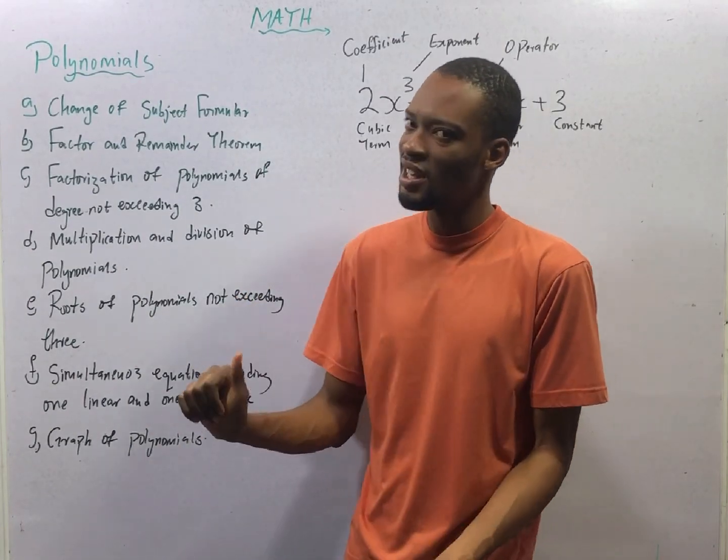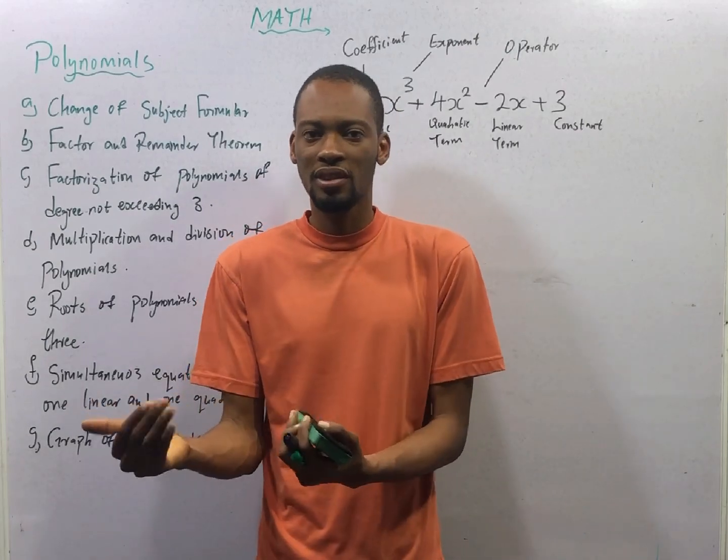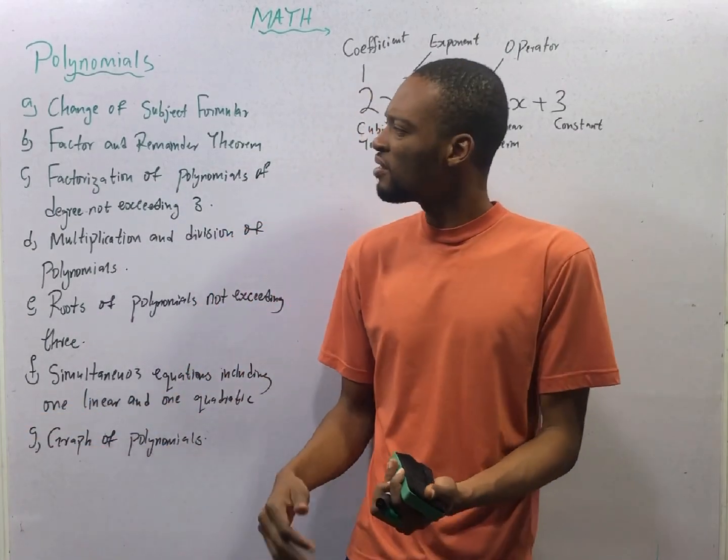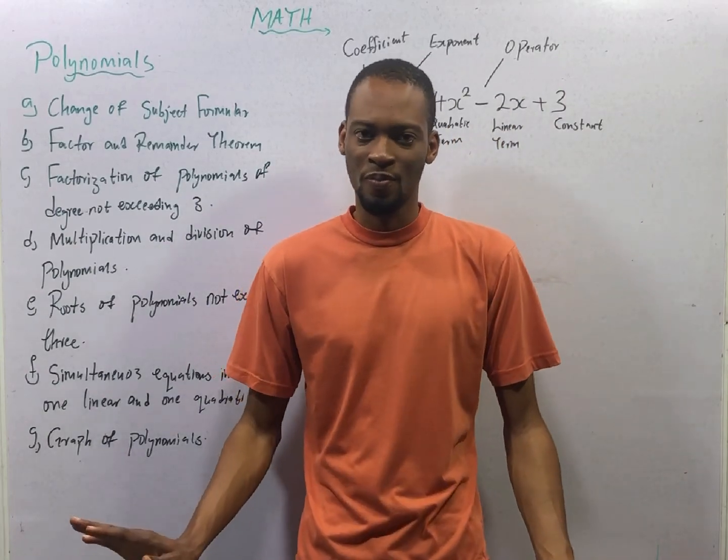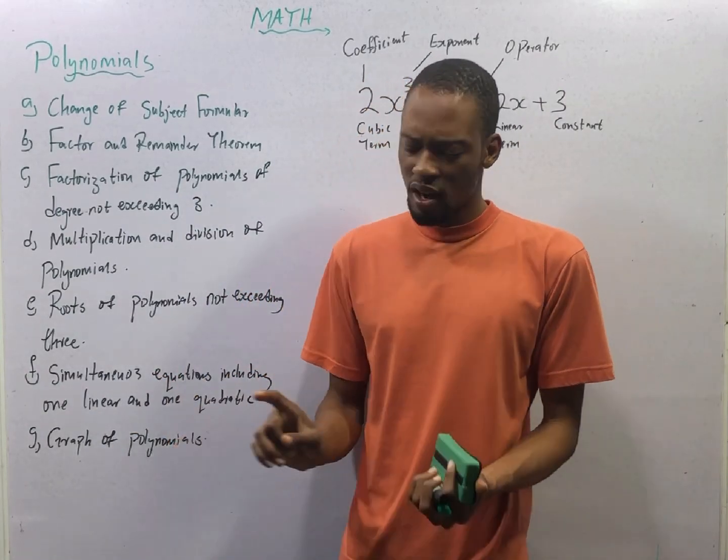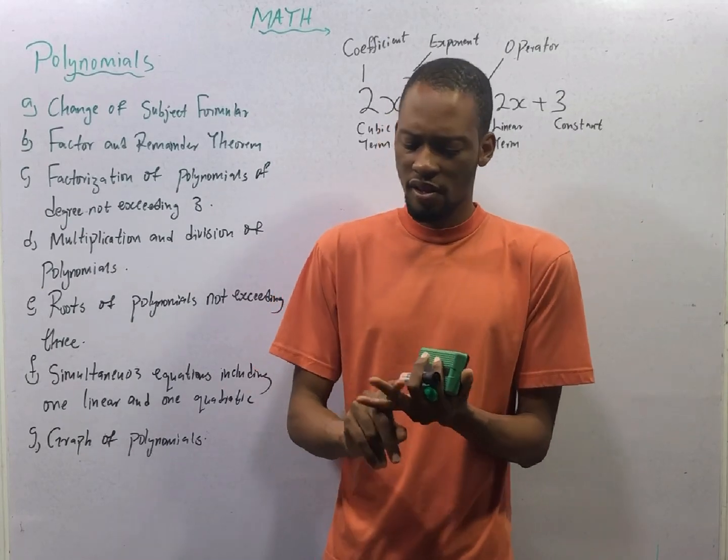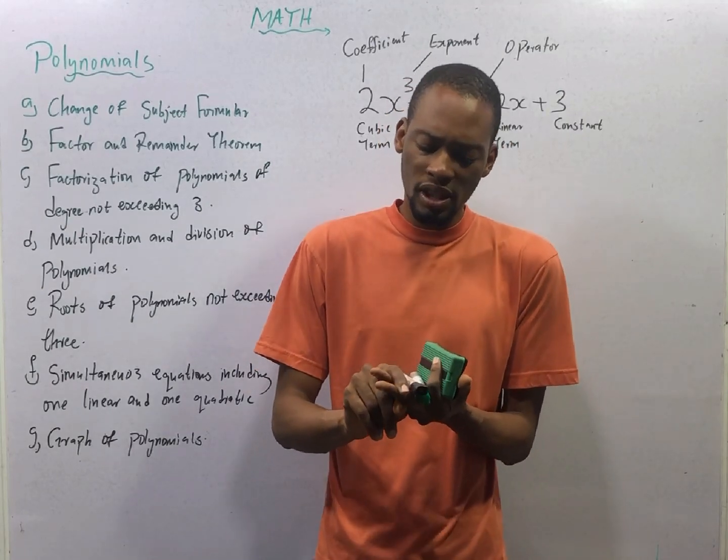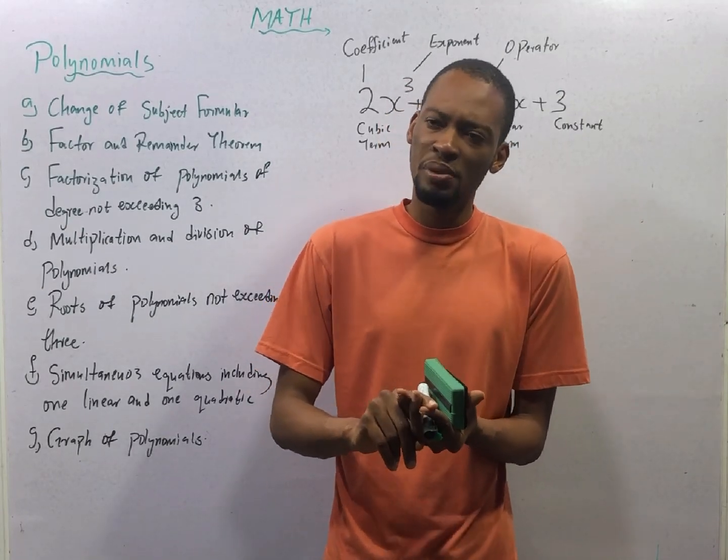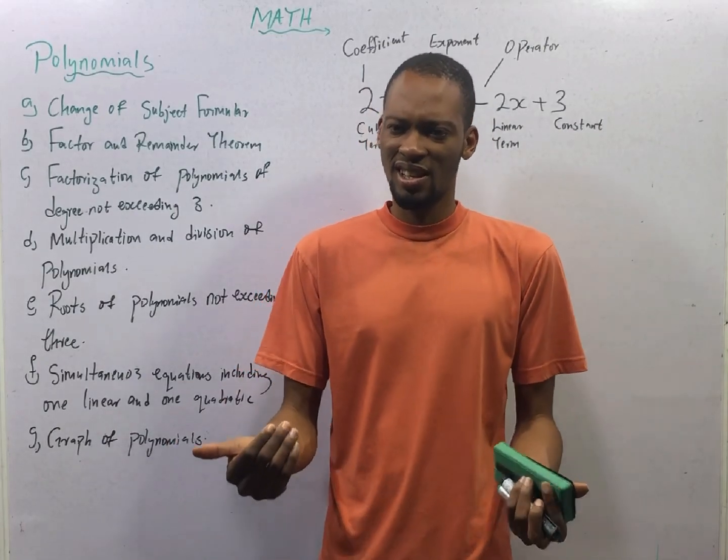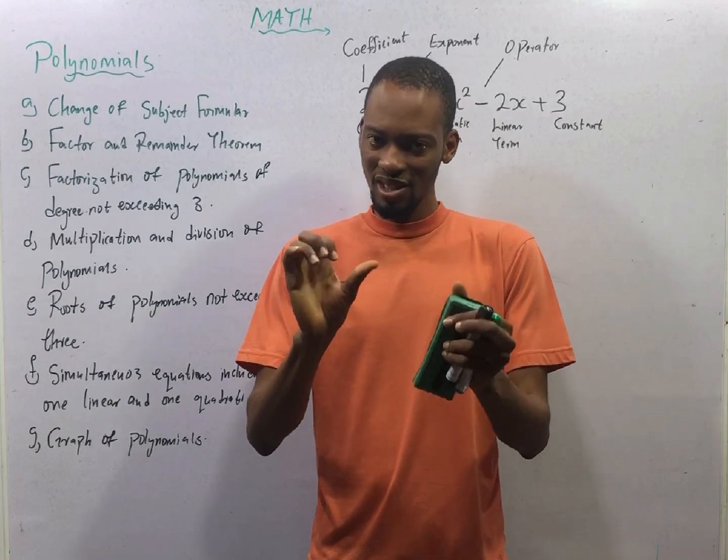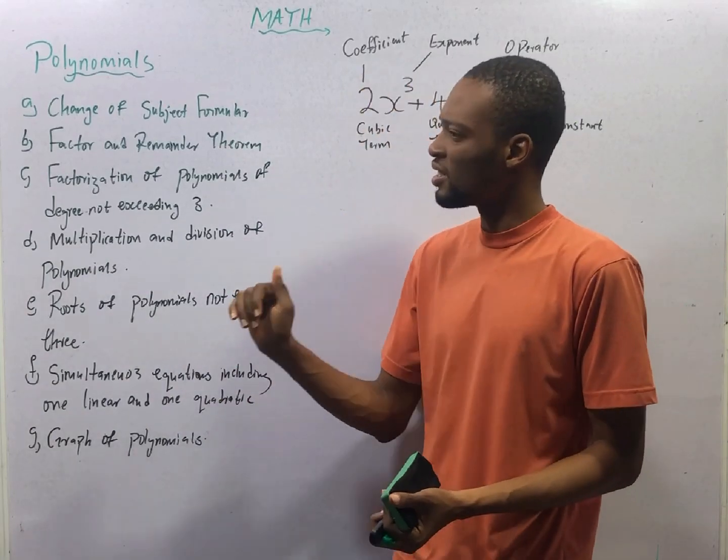Polynomials, in JAMB, is the beginning of algebra. Before now, we have been dealing with topics under number and numeration. Algebra covers polynomial, variation, inequality, AP and GP, matrices and determinants, and binary operation. These are the algebra topics in JAMB.